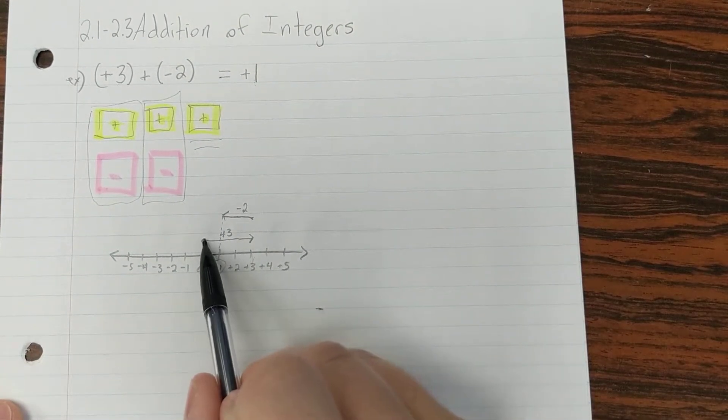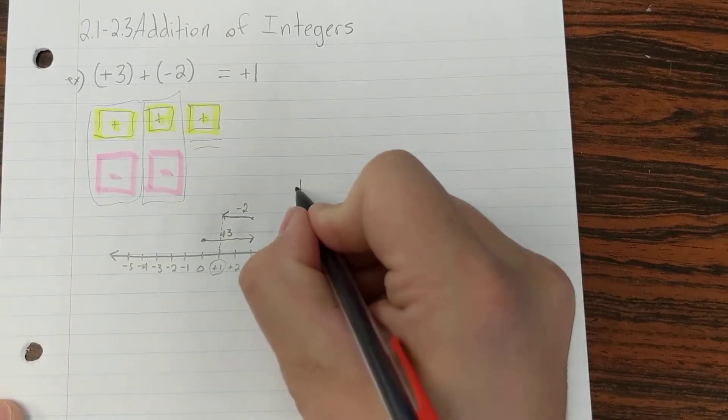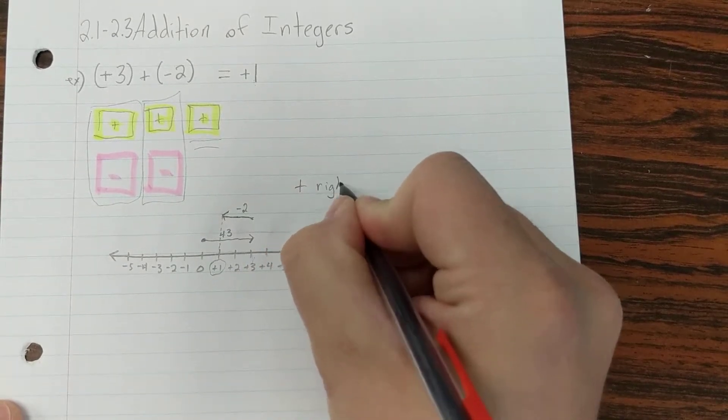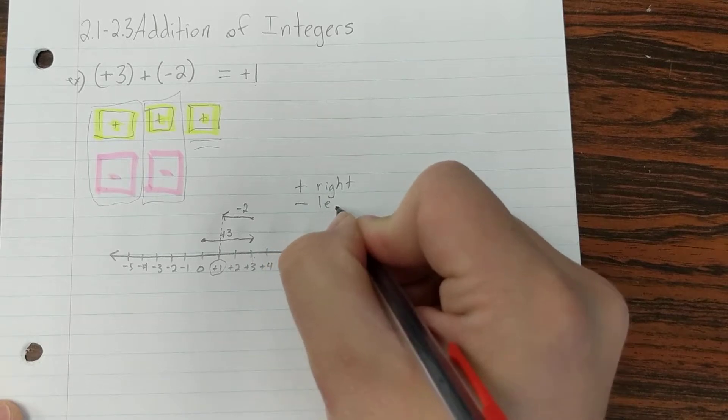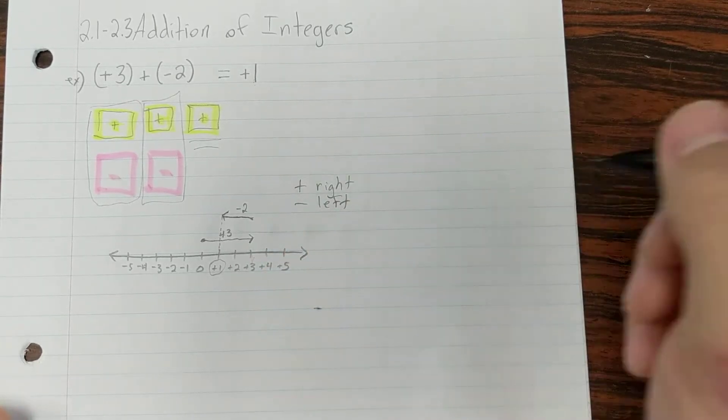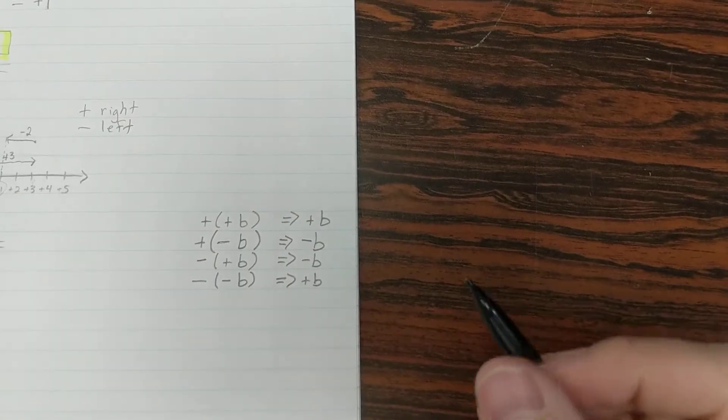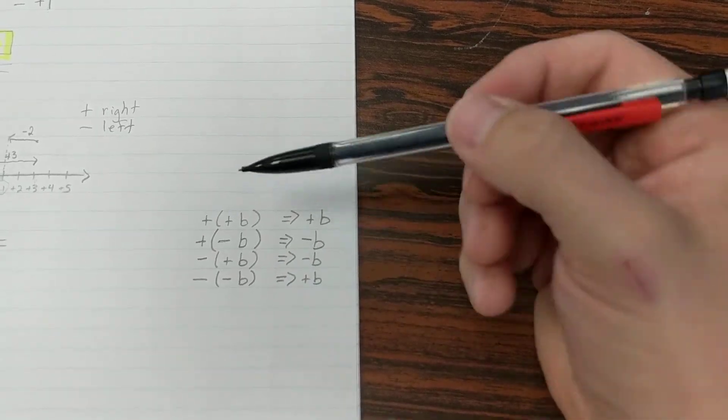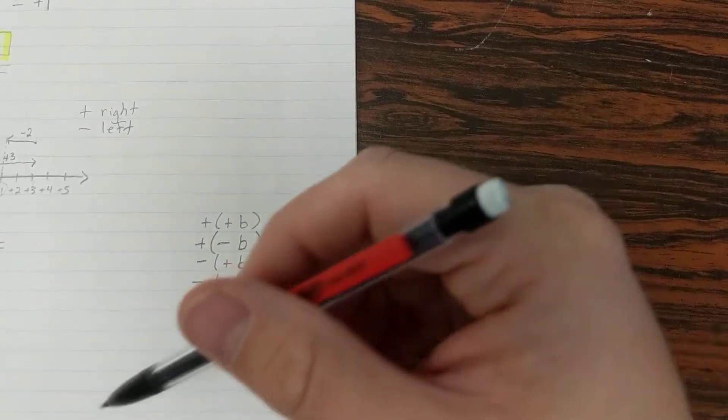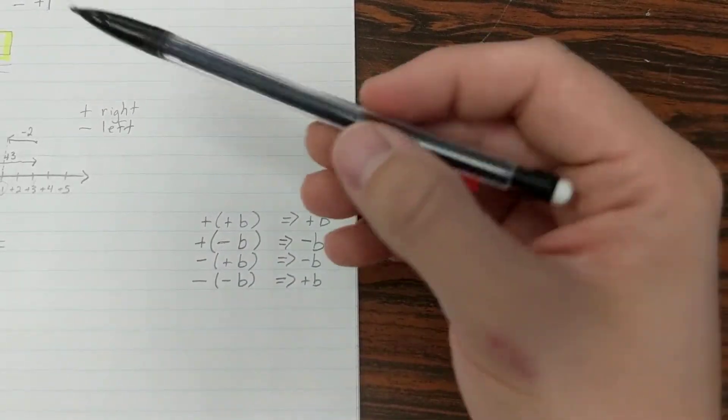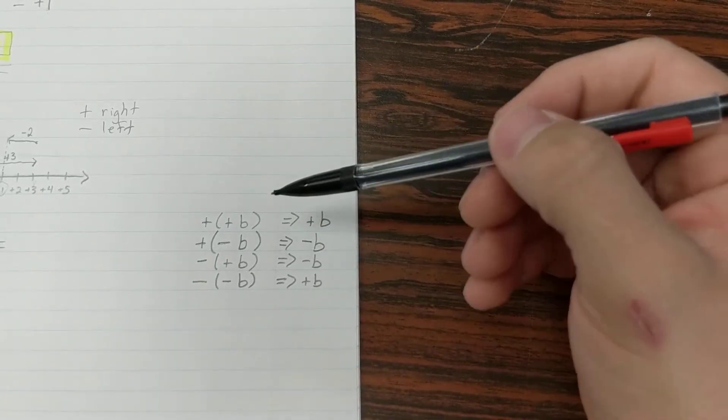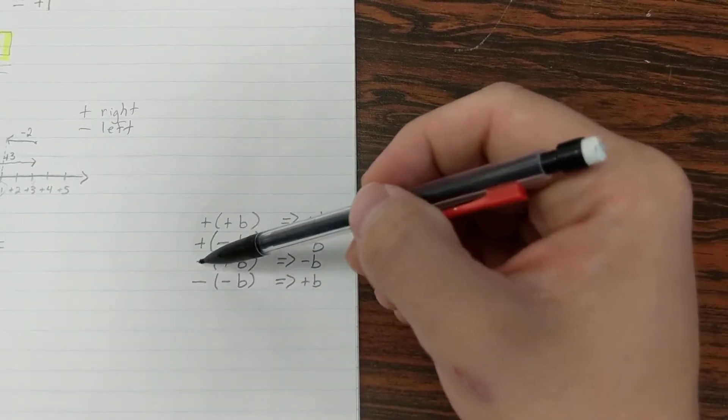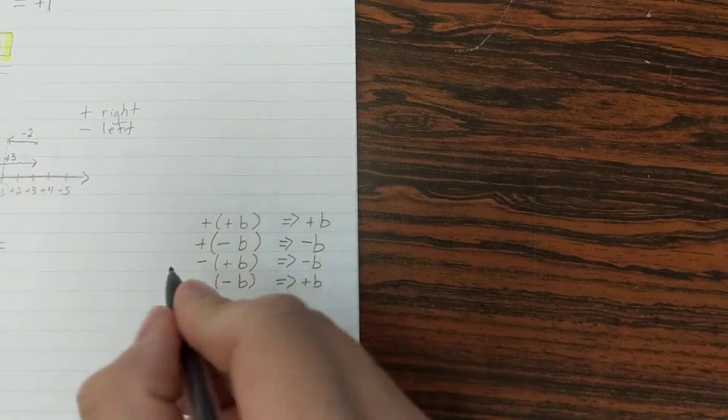We start by drawing one of them, and positive is right, and negative is left. And I'm going to show this thing over here. This is going to be used in our next lessons as well, in 2.4 and 2.5, because it has to do with subtracting.